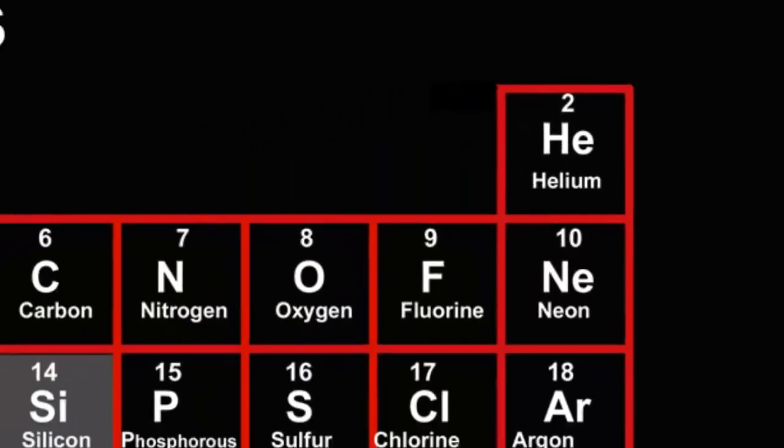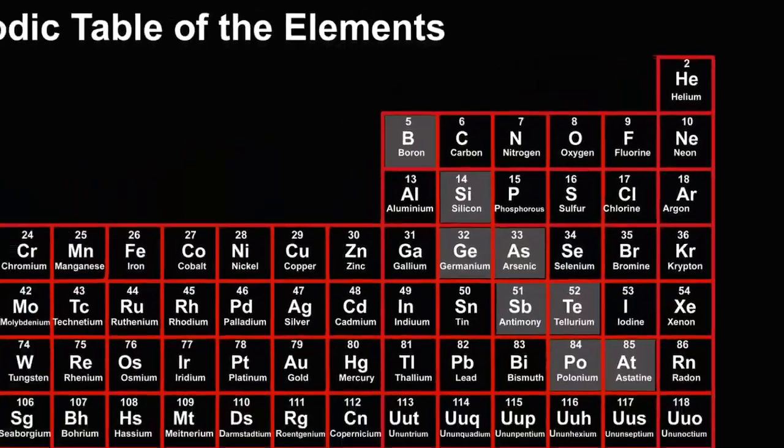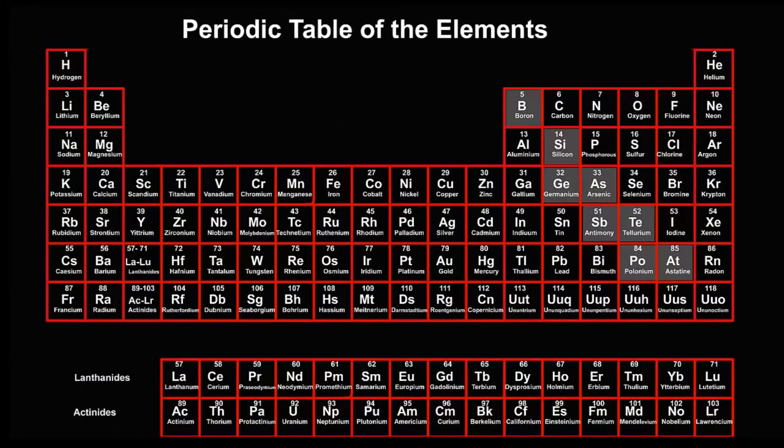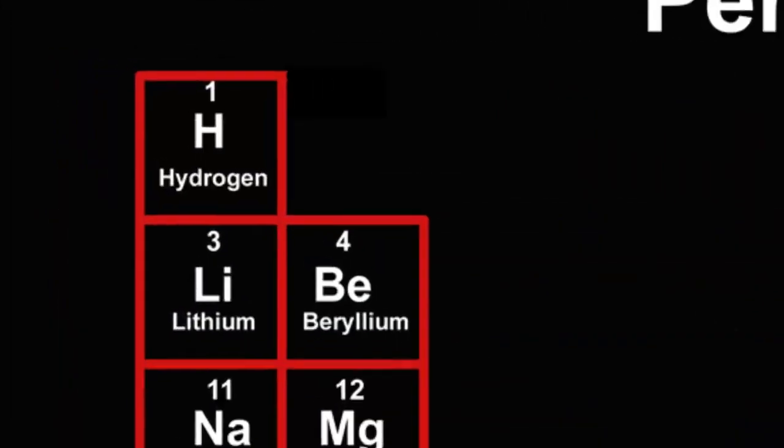The third lightest element is lithium, so it has an atomic number of 3. Where's lithium? It starts the next row.